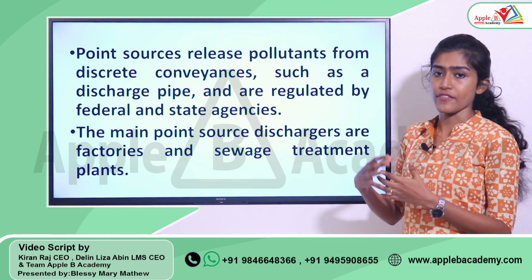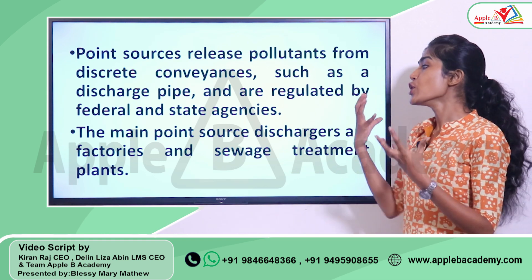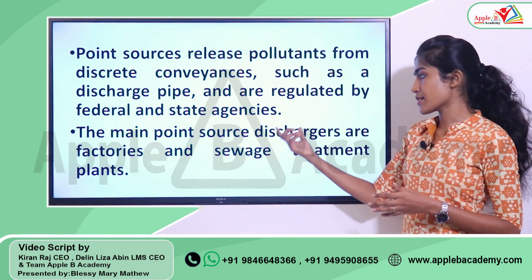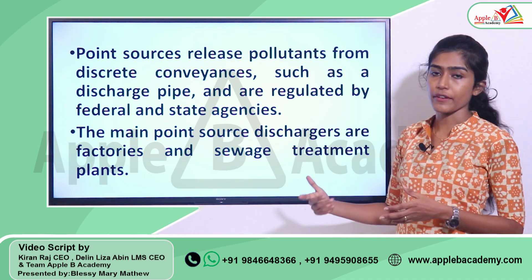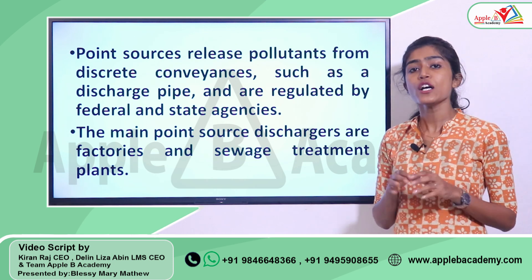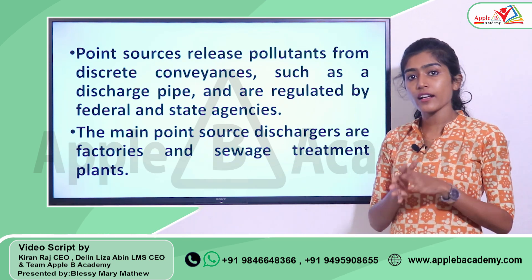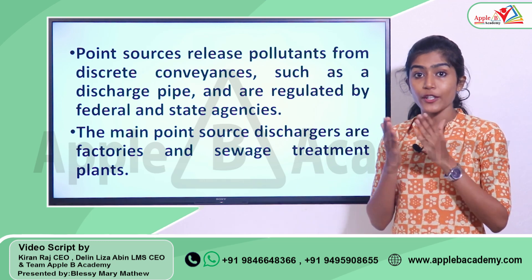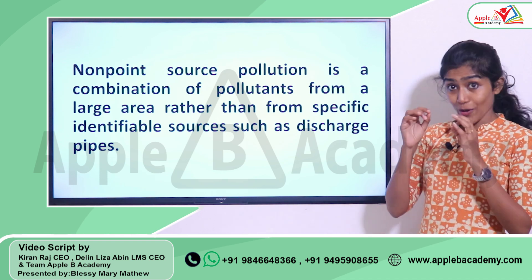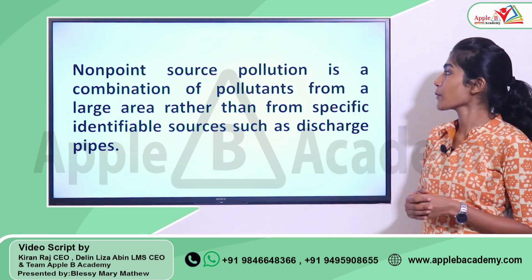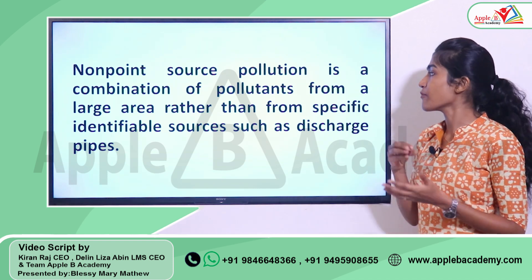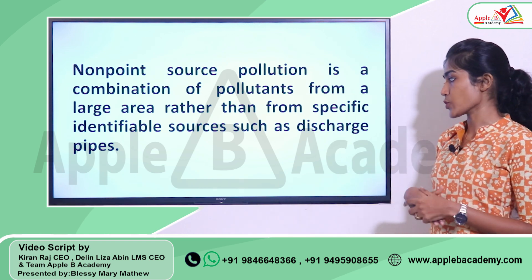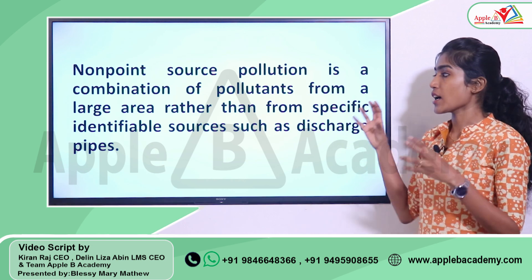Point sources are discrete conveyances or specific identifiable sources. Examples to remember are factories and the discharges coming from factories and also from sewage treatment plants. If point sources are specific identifiable sources, then what do we mean by non-specific sources? Non-point source pollution is a combination of pollutants from a large area rather than from specific identifiable sources such as discharge pipes.